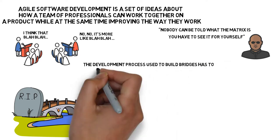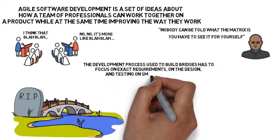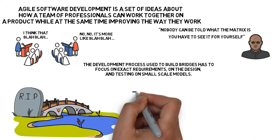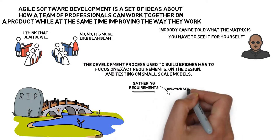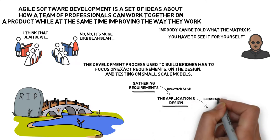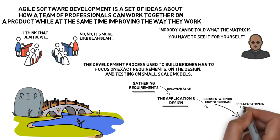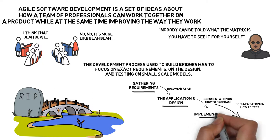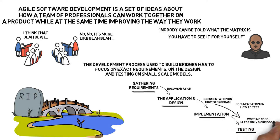The development process used to build bridges has to, therefore, focus on defining exact requirements, on the design and testing on small-scale models. When all this is done, the construction team steps in and builds the bridge exactly to the documentation they get. They're not supposed to have their own ideas and alter anything, or they'll risk the future of the whole enterprise. To some extent, the same goes for the car industry, housing, ships and airplanes — all those areas where construction and testing are expensive, so it makes sense to have everything planned out and without possible mistakes before the workers actually start to build anything.